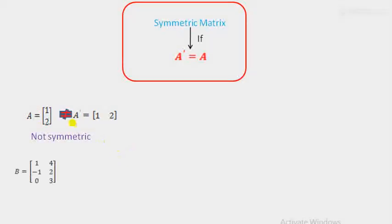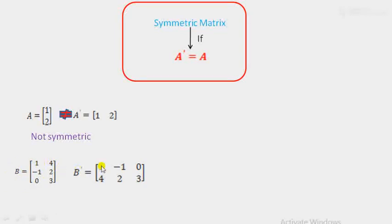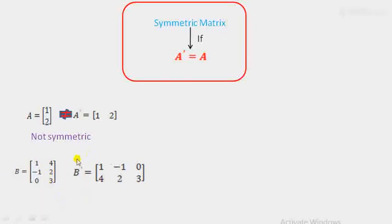Consider another example, matrix B. Again, we have to verify whether it is symmetric or not. Find the value of B-dash — B-dash means transpose of matrix B. The rows become columns: one four, minus one two, zero three. The order of matrix B is three cross two, and the order of B-dash is two cross three. Both orders are not equal, therefore it is not a symmetric matrix.